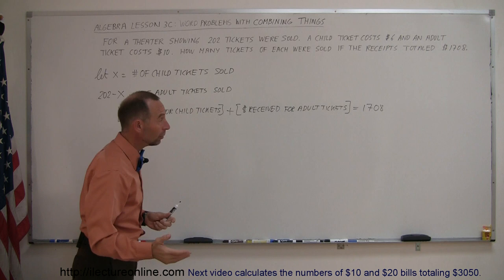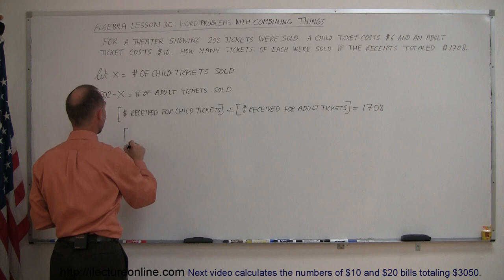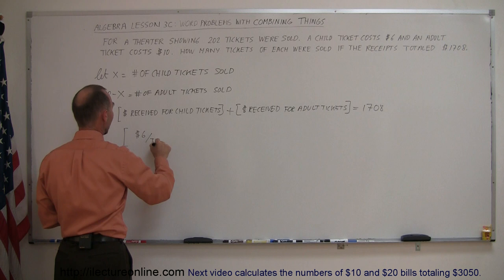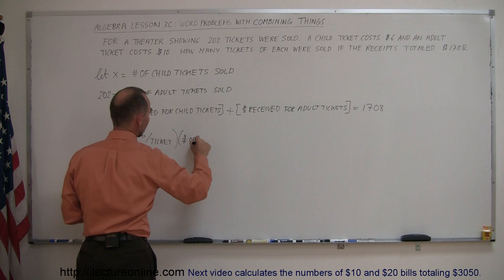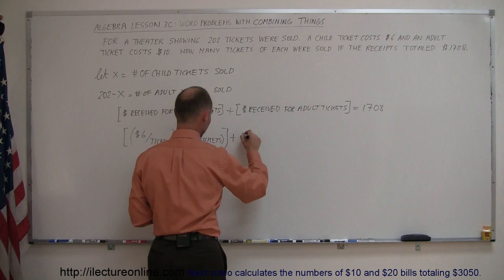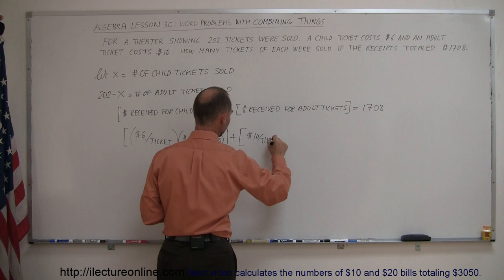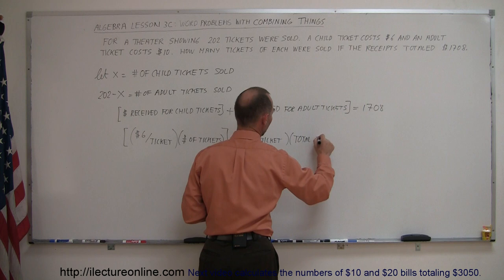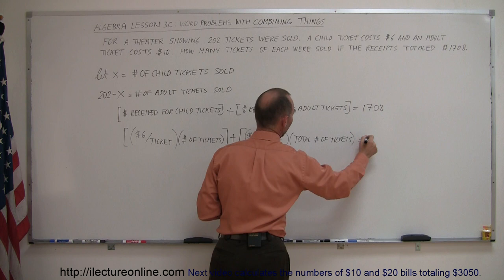How do you algebraically express the number of dollars received for child tickets? You take the cost per ticket, which is $6 per ticket, and you multiply that times the number of tickets. The cost per ticket times the number of tickets gives you the total cost for all of those tickets. You do the same for the adult tickets. There we have the cost of $10 per ticket, and then you multiply that times the total number of tickets for the adults.